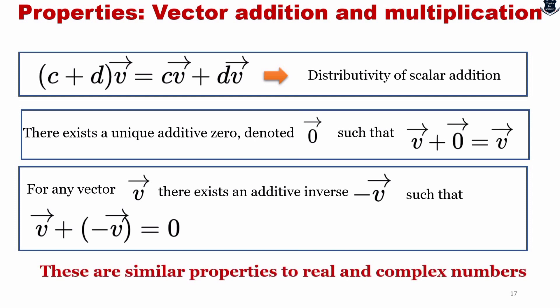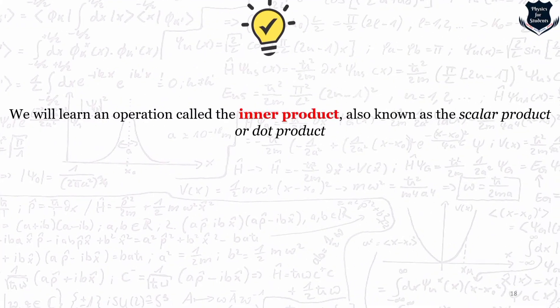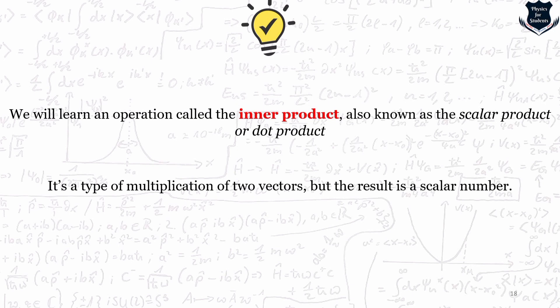Remember, numbers are actually vectors of dimension one. The last two properties — additive zero and additive inverse — were included because we are about to define the concept of a vector space, which applies not just to vectors but potentially to other mathematical objects such as functions. An important upcoming operation is the inner product, also known as the scalar or dot product — a type of multiplication of two vectors whose result is ultimately a scalar.